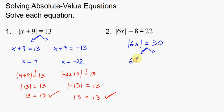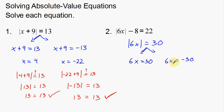Now I can split this apart. The left split is 6x equals 30, and the right split is 6x equals negative 30. Interestingly, you'll do the same steps on both — divide by 6 both times. So x equals 5, and x equals negative 5.